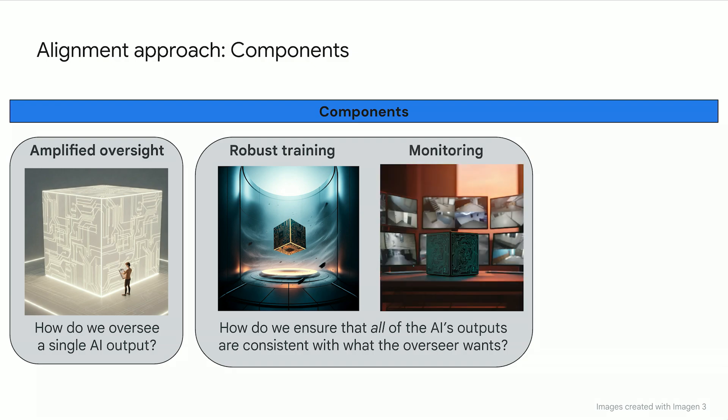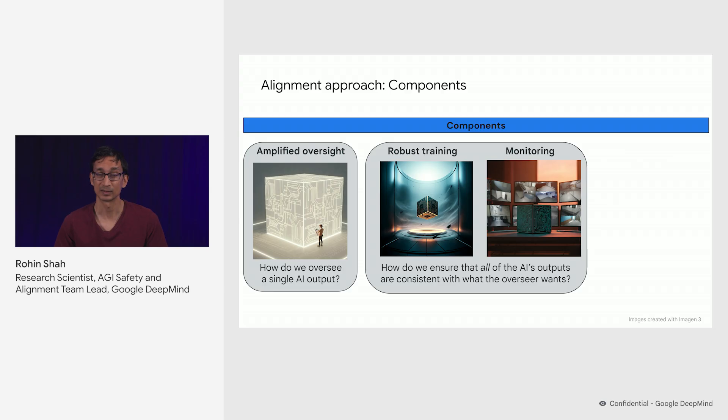Second, we could simply monitor every output from the AI system after it is deployed. A major challenge here is how we can scale the quite expensive techniques from amplified oversight to the billions or trillions of outputs that an AI system will produce during deployment. So in principle, these three techniques are sufficient to achieve informed oversight.